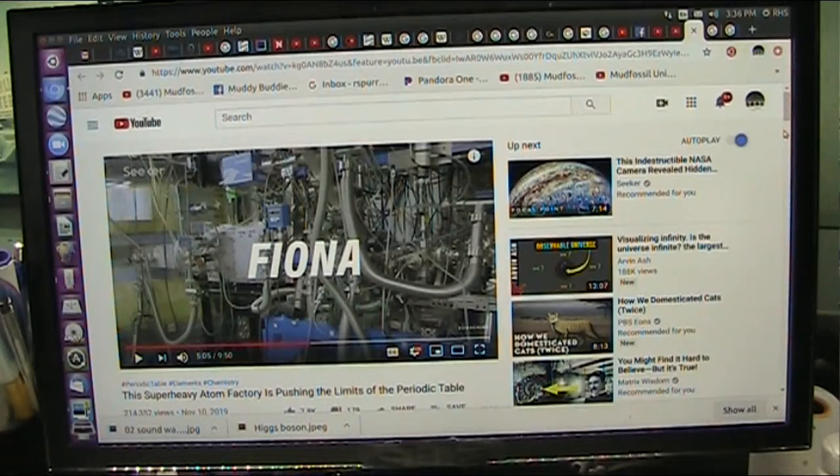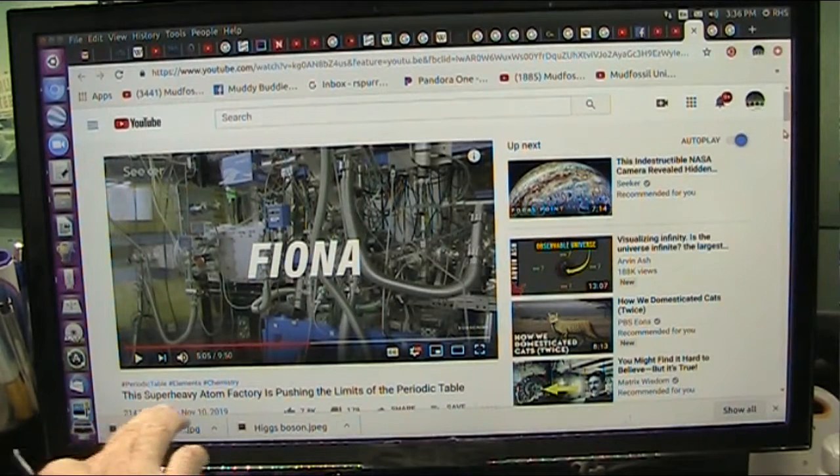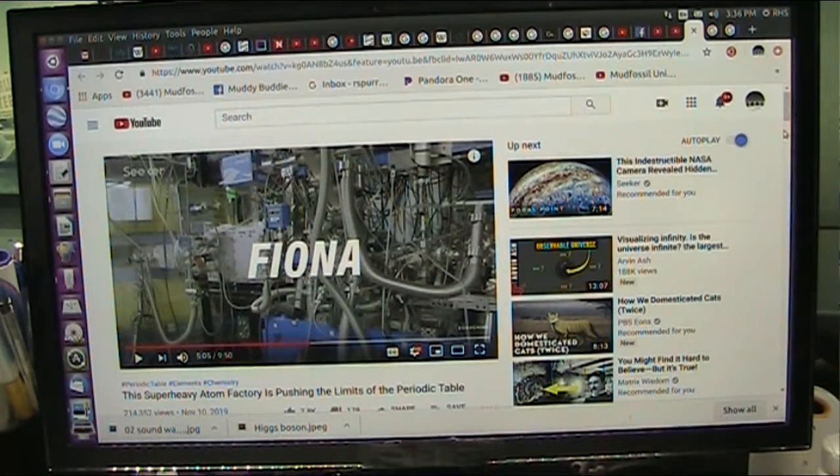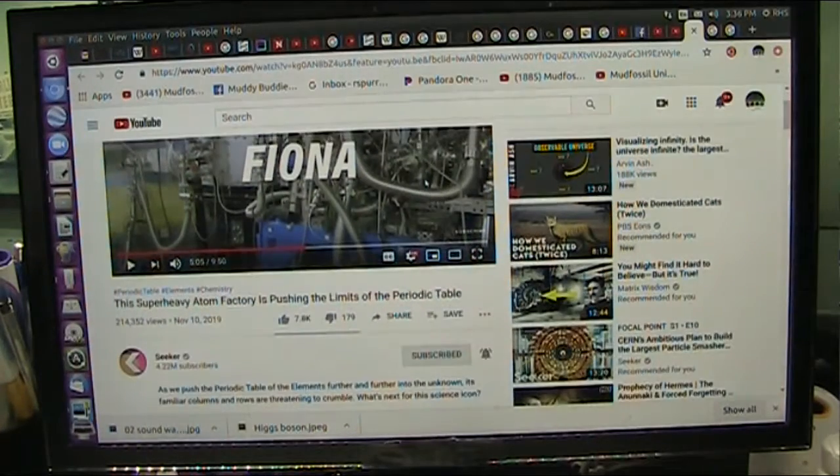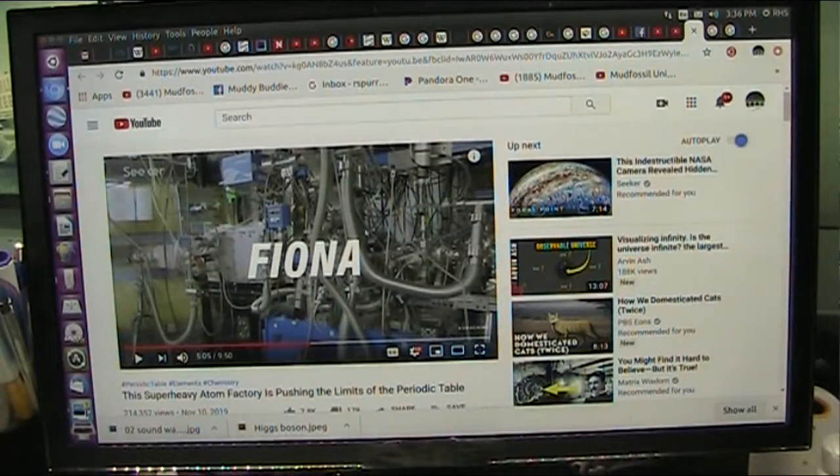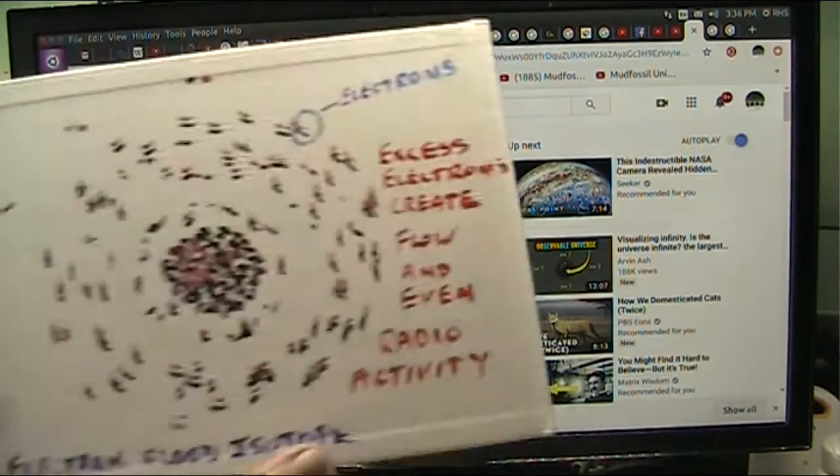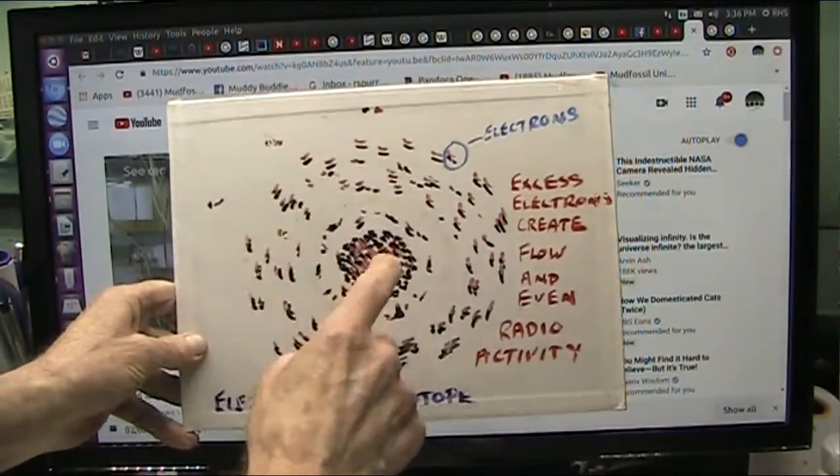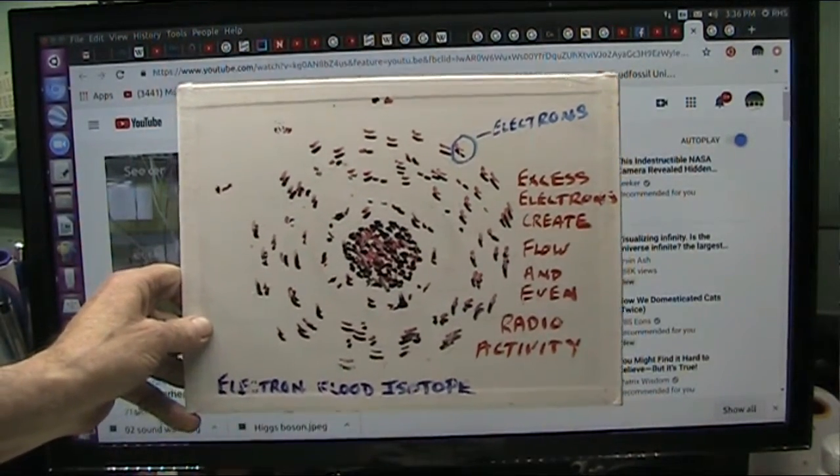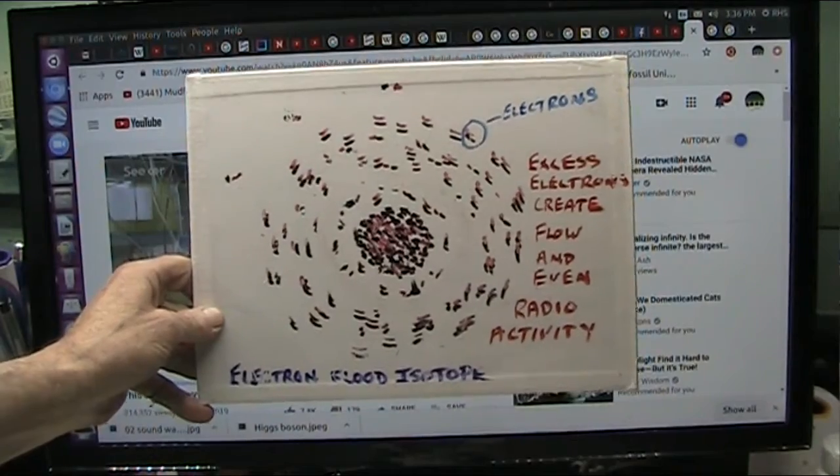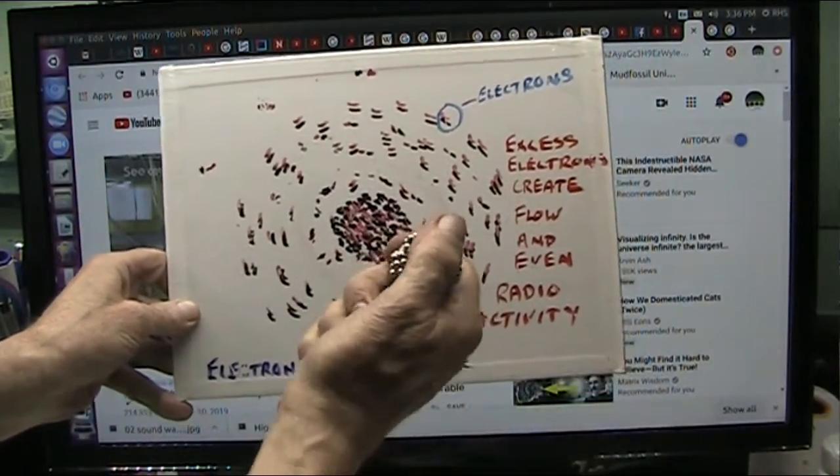Okay, I'm going to make this kind of quick and simple. This is called FIONA - it's the super heavy atom factory at Lawrence Livermore and Berkeley labs working on this apparently. They are trying to create super super heavy elements by forcing elements to combine. Now I have electron flood theory, which says that all particles are made of tons of little particles.